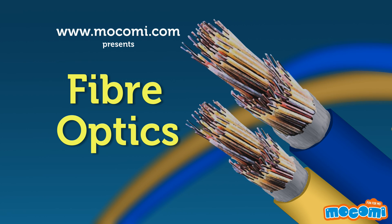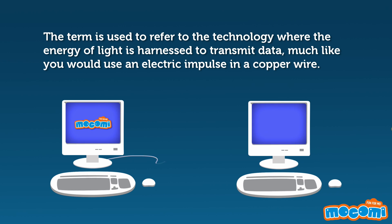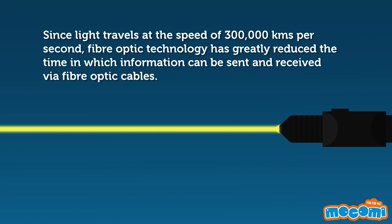What are Fibre Optics? The term is used to refer to the technology where the energy of light is harnessed to transmit data, much like you would use an electric impulse in a copper wire. Since light travels at the speed of 300,000 km per second, fiber optic technology has greatly reduced the time in which information can be sent and received via fiber optic cables.